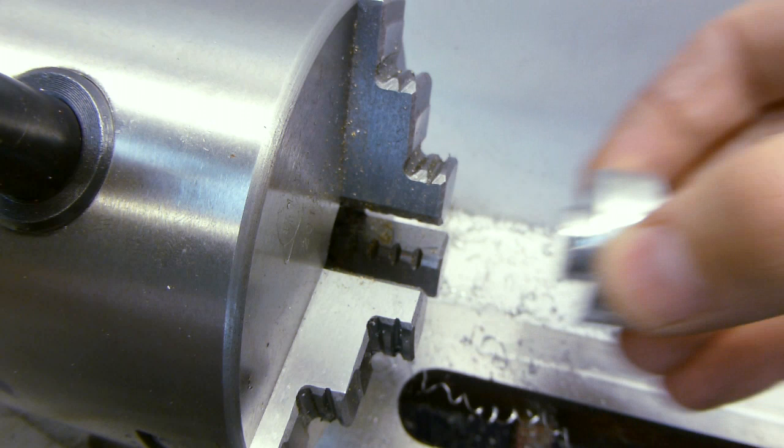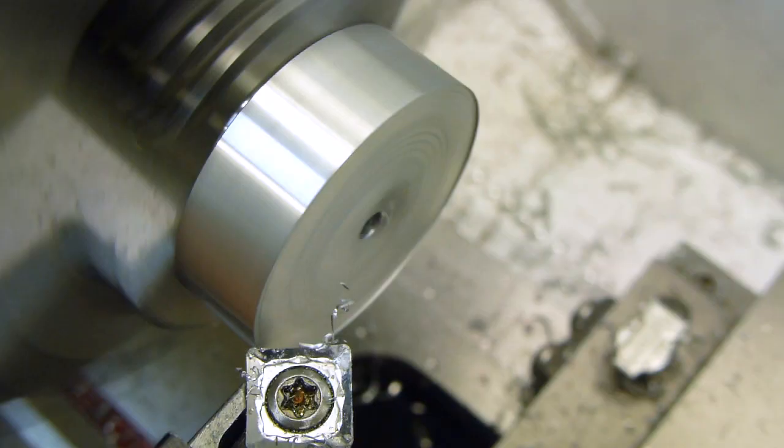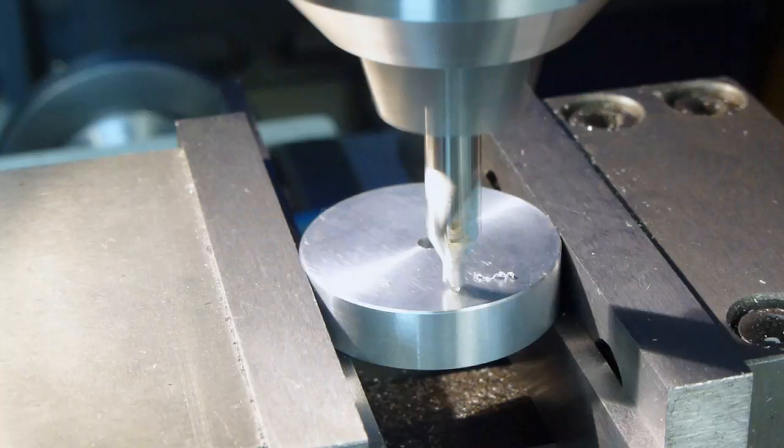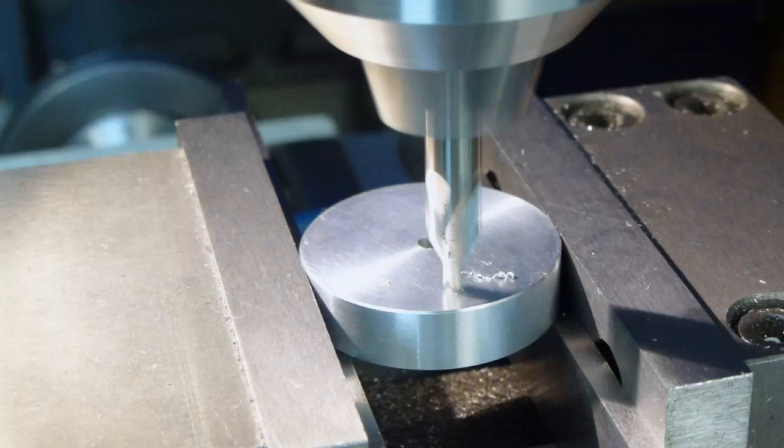After some warmth from the blowtorch, the parts were separated. Then it was back to the lathe to take off some of the spare thickness. Lastly, I made a hole to take a drive pin.